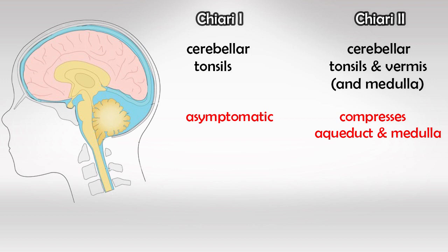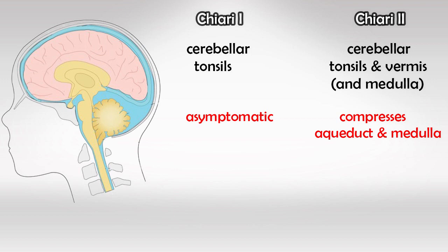Type 1 is usually asymptomatic but may present with headache later on in life, while type 2 is more severe as it causes hydrocephalus along with compression of the respiratory and swallowing centers in the medulla, so it presents with apnea and dysphagia.